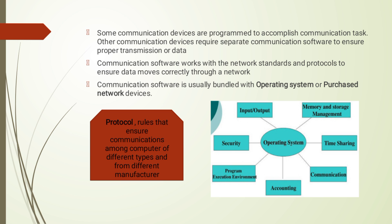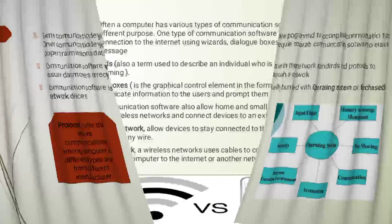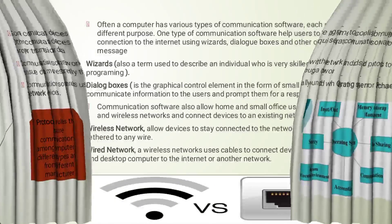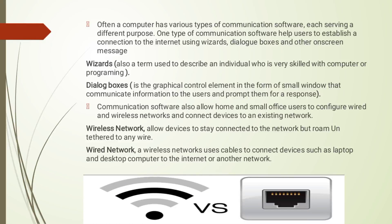Communication software is usually bundled with the operating system or purchased with network devices. An operating system may include memory and storage management, input, output, communication, accounting, security, etc. A computer often has various types of communication software, each serving a different purpose. One type helps users establish a connection to the internet using a wizard. A wizard is a term used to describe an individual who is very skilled with computers or computer programming.